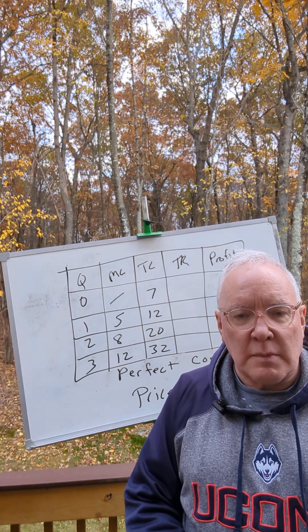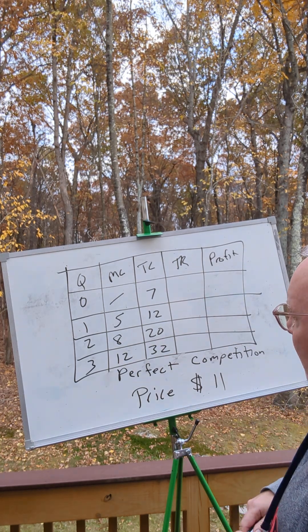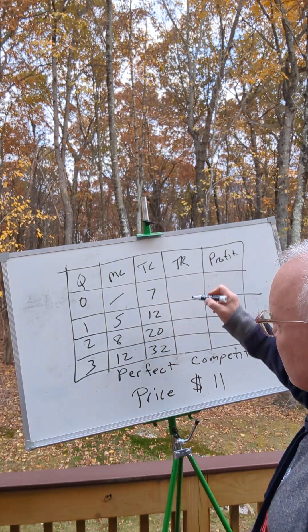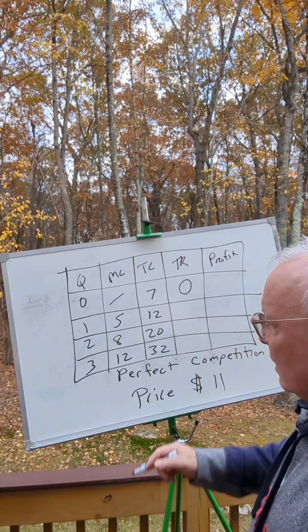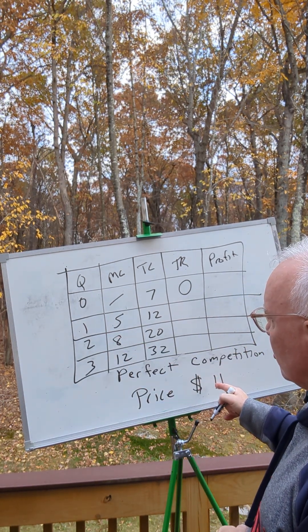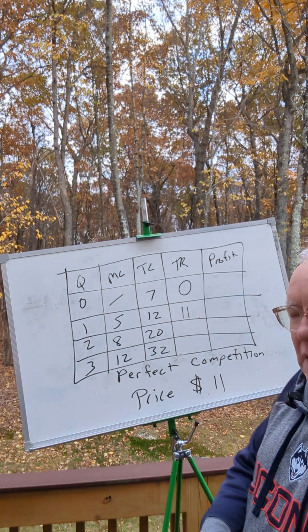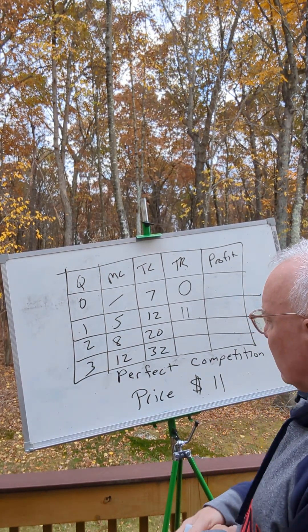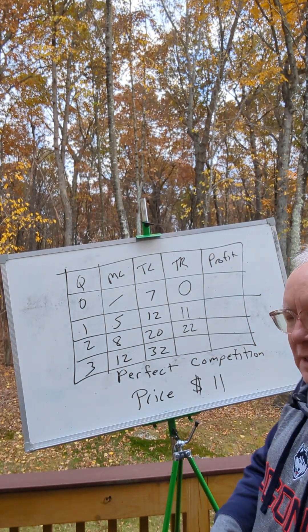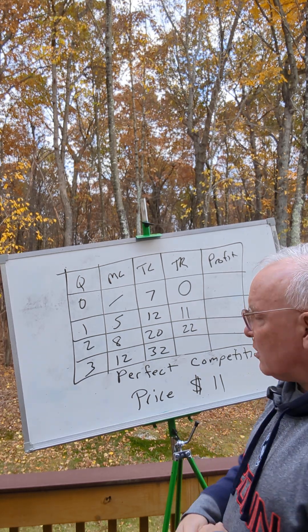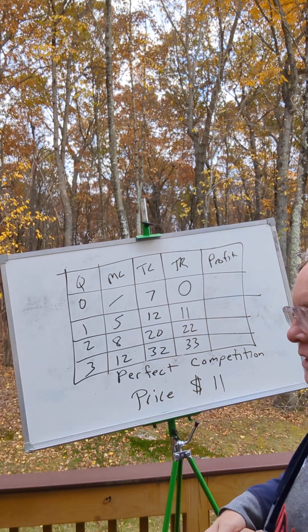So let's check to make sure that that's really true. At $11, our total revenue at quantity zero would be zero, so we're not selling anything, we're not making any money. If we sell one item, our total revenue would be $11, because 11 times 1 is 11. If we sell two items, our total revenue would be 22, because 11 times 2 is 22. And if we sell three items, our total revenue would be 33, because 11 times 3 is 33.